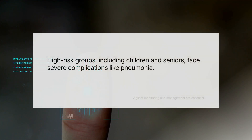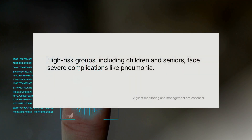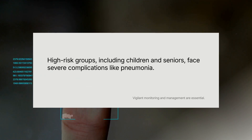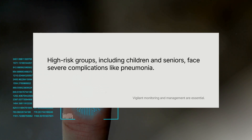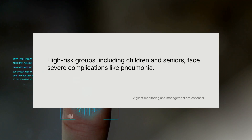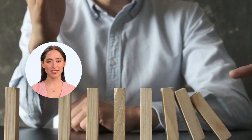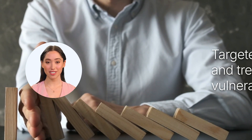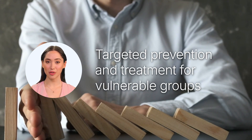Influenza can lead to serious complications, especially in high-risk groups such as young children, older adults 65 years and older, pregnant women, people with weakened immune systems, and individuals with chronic medical conditions. Possible complications can include pneumonia, myocarditis, encephalitis, myositis, and multi-organ failure. Understanding these risks underscores the importance of targeted prevention and treatment strategies for vulnerable populations.